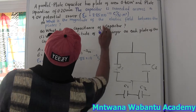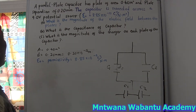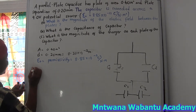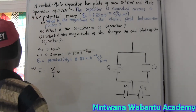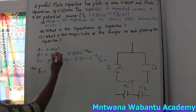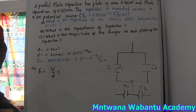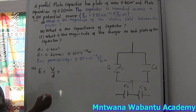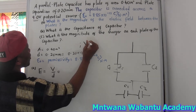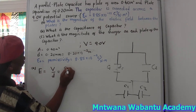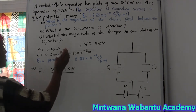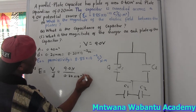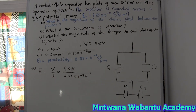The permittivity is given as a constant — coulombs squared per newton times meters squared. So now, part A asks for the magnitude of the electric field between the plates. Electric field E equals V over d — the potential difference over the distance of separation. Our potential difference is 9.0 volts, and the separation is 0.2 times 10 to the power negative 3 meters.